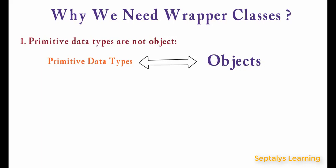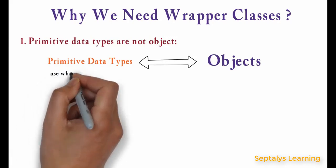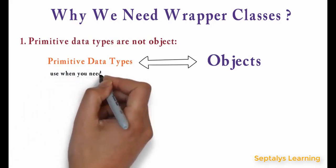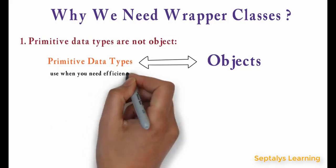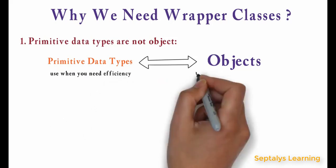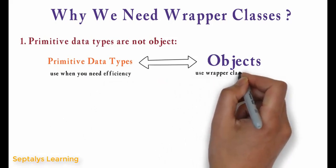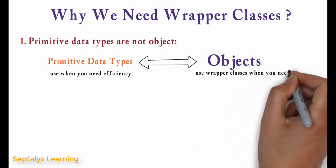On the other hand, wrapper objects hold much more memory compared to primitive types. So use primitive types when you need efficiency, and use wrapper classes when you need objects instead of primitive types.